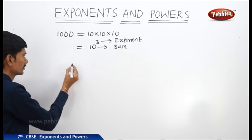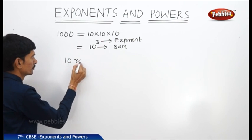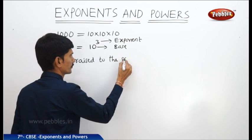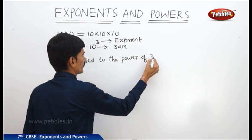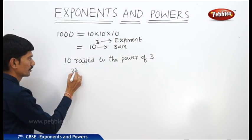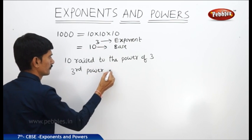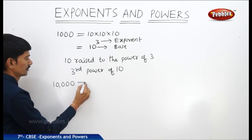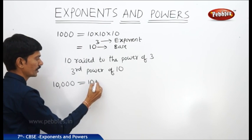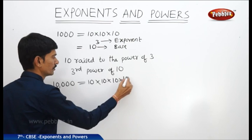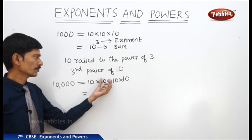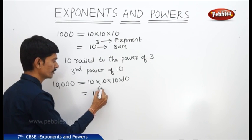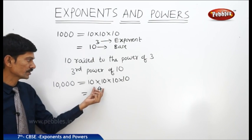10 to the power of 3 is read as '10 raised to the power of 3' or the '3rd power of 10.' Similarly, 10,000 is obtained by multiplying 10 four times: 10 × 10 × 10 × 10. This is written as 10 to the power of 4, or '10 raised to the power of 4.' Here also, 10 is called the base and 4 is called the exponent.